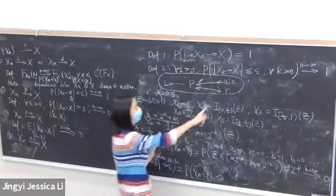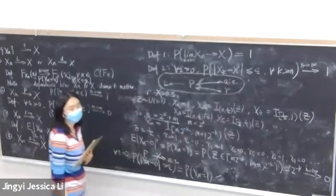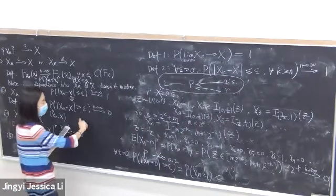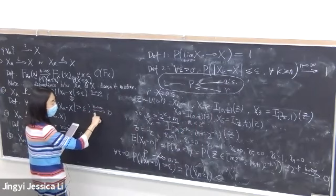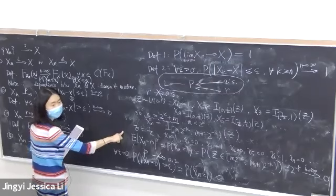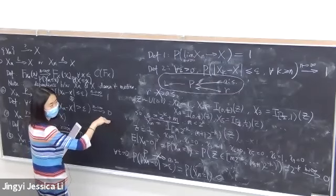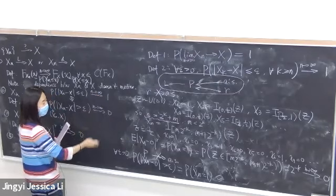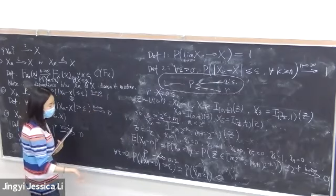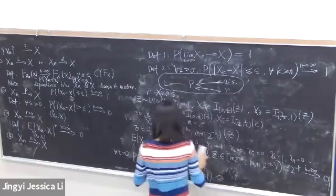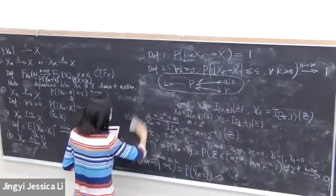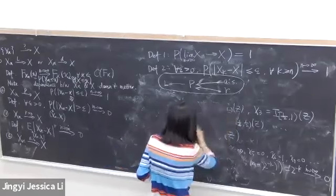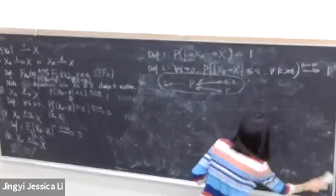Conversely, almost sure convergence does not imply r-th mean convergence. Here we define Z ~ Uniform(0,1) and X_n = 2^{n/r} · 1(Z ∈ [0, 1/n)). The sequence is designed to rise exponentially before dropping to zero, so every realization converges to zero. But when we take expectation, E[|X_n|^r] = 2^n · (1/n) → ∞, so r-th mean convergence fails. This illustrates why the Monotone Convergence and Dominated Convergence theorems are necessary.